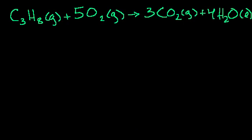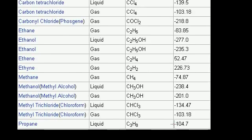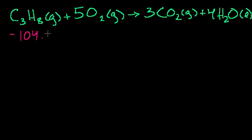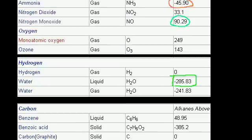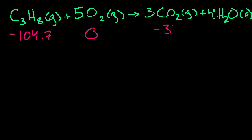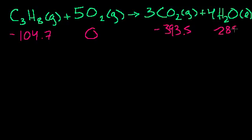Let's do one more example. We have propane combusting with oxygen to yield carbon dioxide and water. The heat of formation of liquid propane is minus 104.7 kilojoules per mole. Oxygen is in its elemental state so it's zero. Carbon dioxide gas has a heat of formation of minus 393.5 kilojoules per mole. Water is minus 285.83 kilojoules per mole.